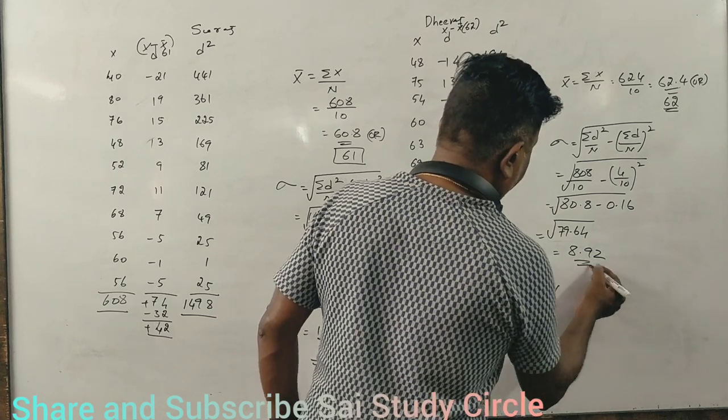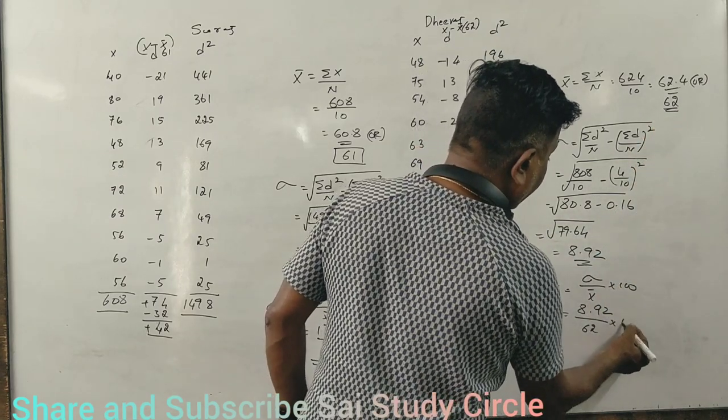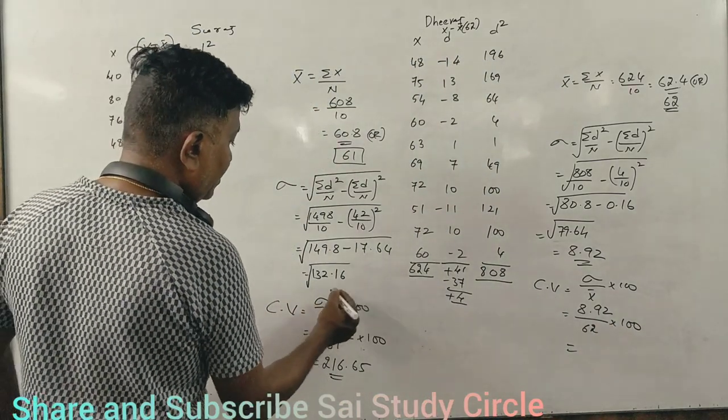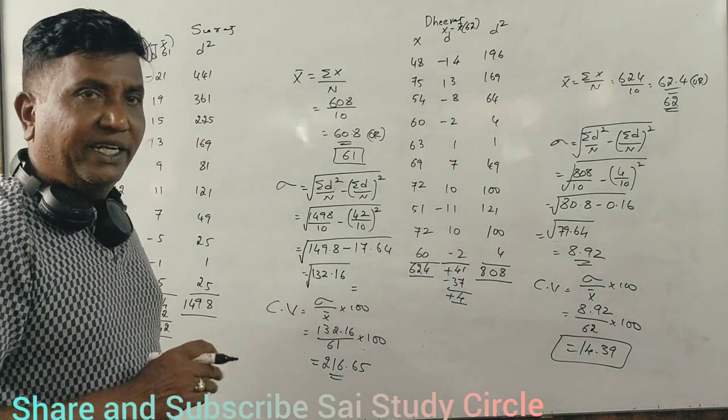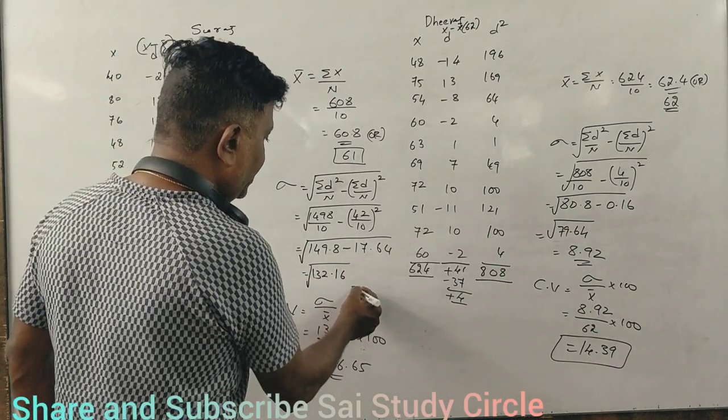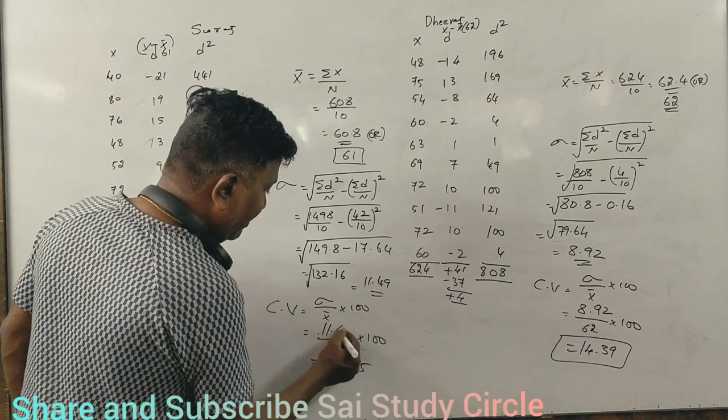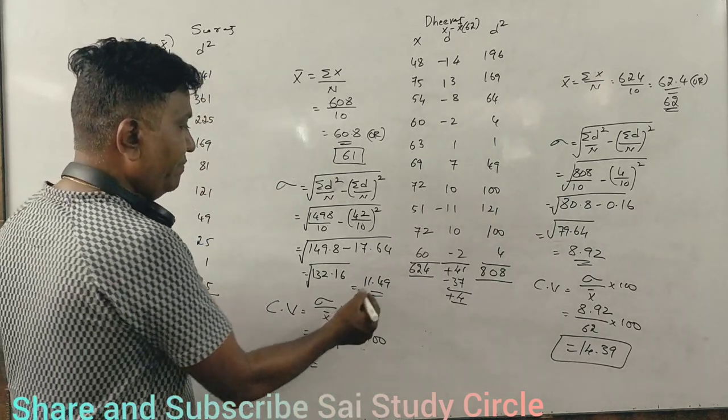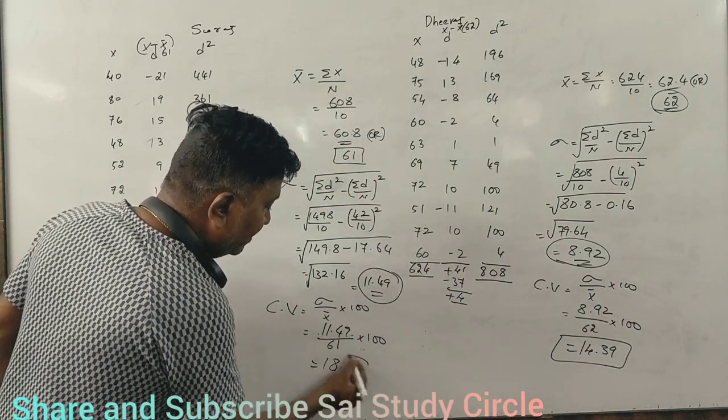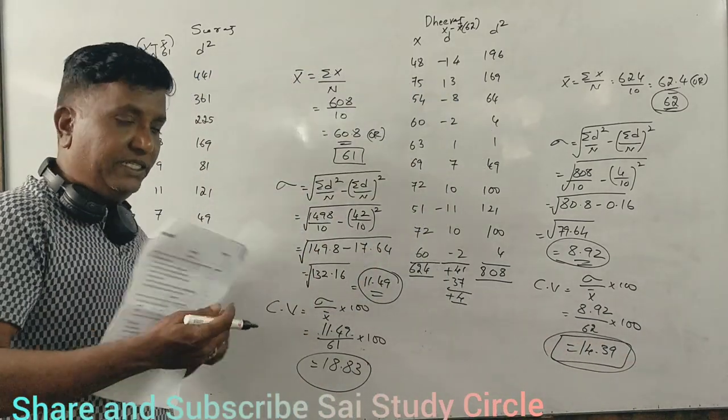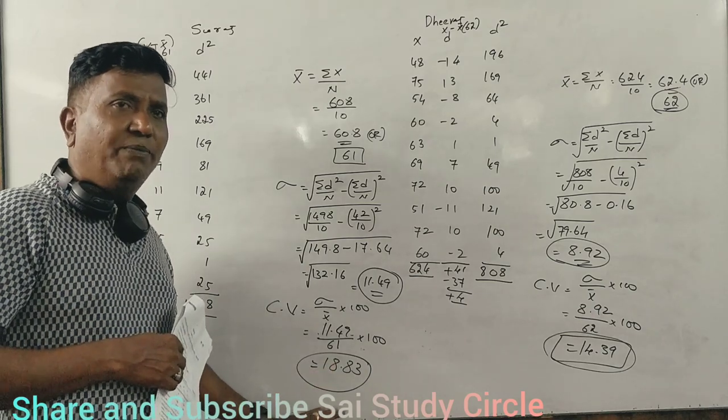Coefficient of variation: standard deviation divided by mean. 8.92 divided by 62 into 100 equals 14.39. For Suraj it was 18.82. So Deeraj is more consistent and better. Deeraj should get the prize. Do you understand?